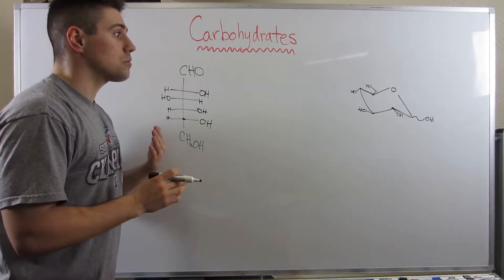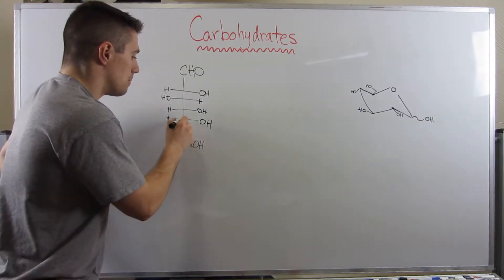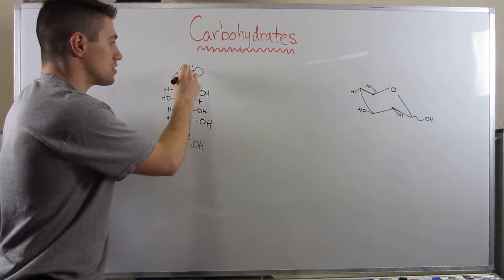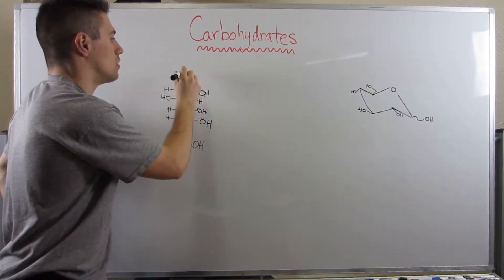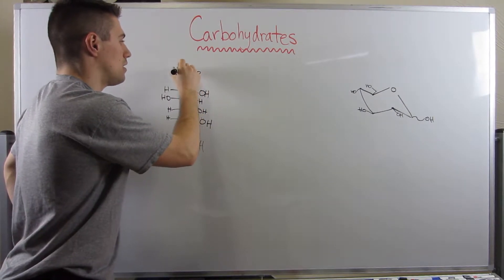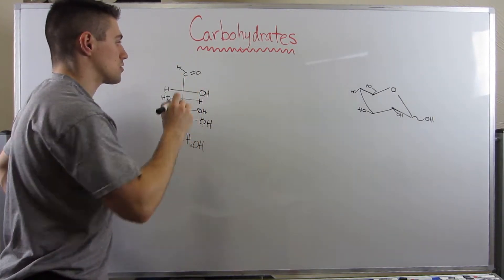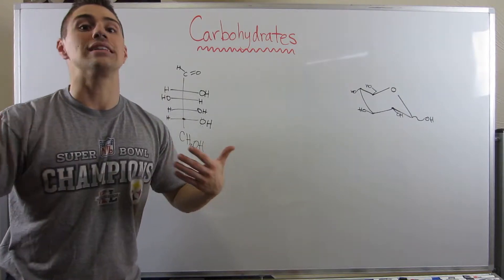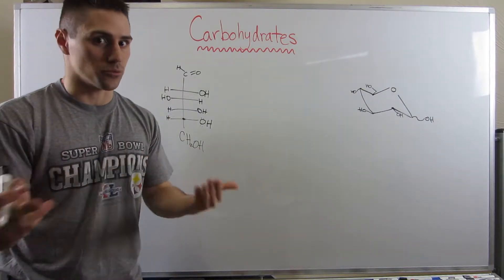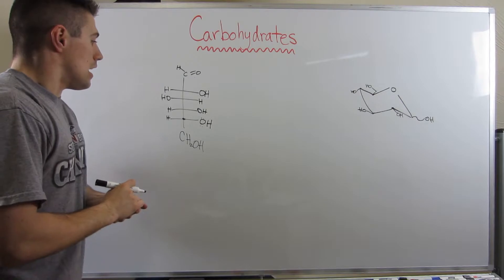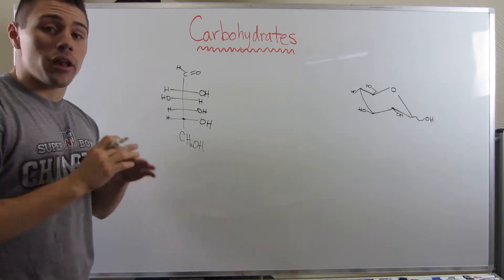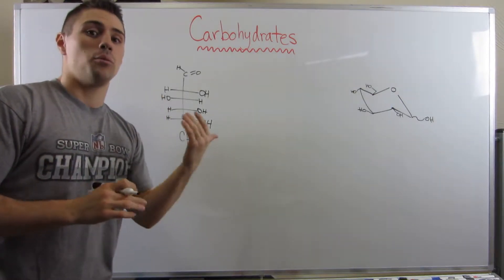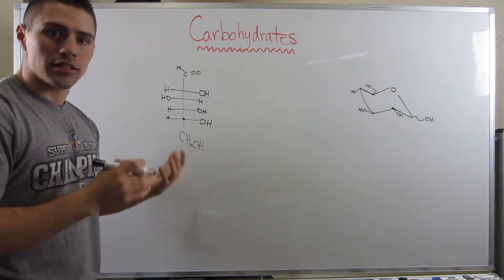The thing that is going to attack this — because remember, this is a carbonyl, we've attacked carbonyls all the time — look back no further than Chapter 17, all we did was attack aldehydes and ketones. Well, we can form not an acetal like we did in Chapter 17, but we can form a hemiacetal. Here's how we're going to do it.